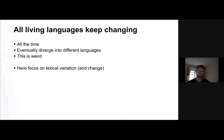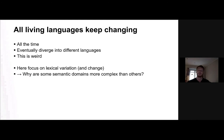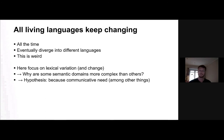In particular, I'm interested in lexical variation of words — variation and therefore also change. Why are some semantic domains more complex than others? Why are some languages very specific about something, whereas others are vague? The hypothesis is that, among other things, one reason is probably communicative need. Communicative needs differ between language communities.